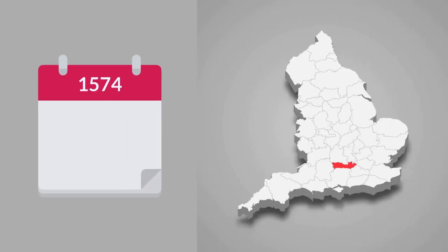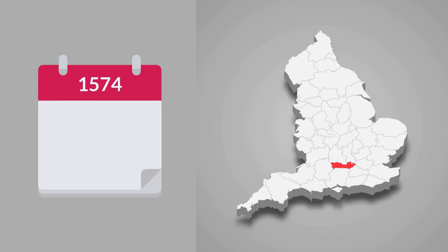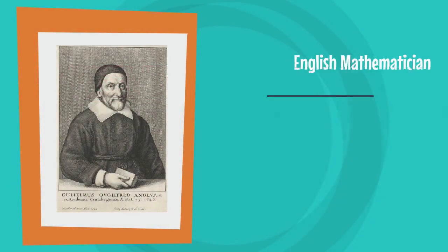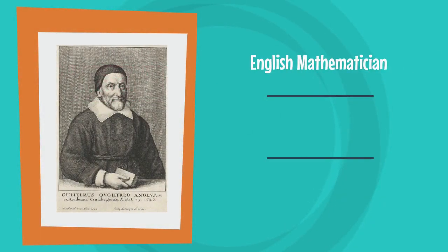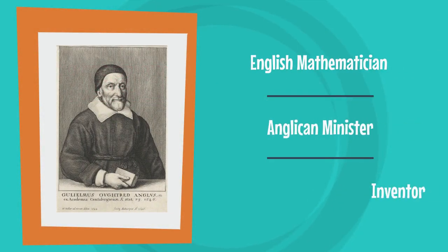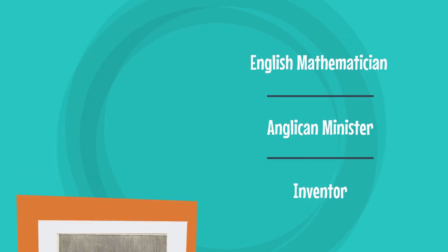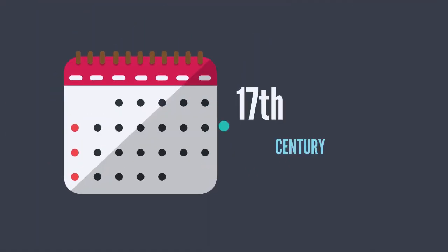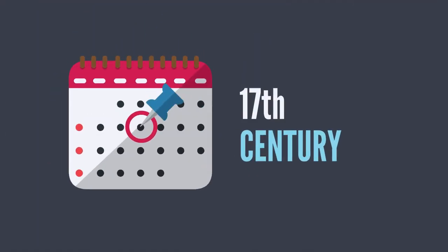William Oughtred, born in 1574 in Eton in Buckinghamshire, now part of Berkshire, was an English mathematician, Anglican minister, and inventor who made significant contributions to the field of mathematics during the 17th century.